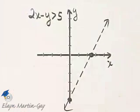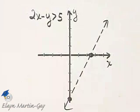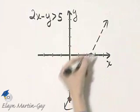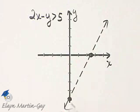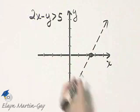Now I need to shade one side of the boundary line or the other. How do we decide what side to shade? We find a test point not on the boundary line, and we check the test point.